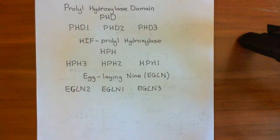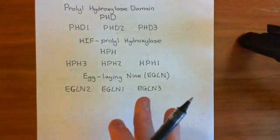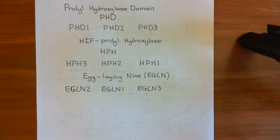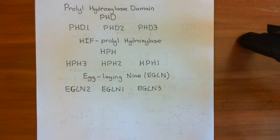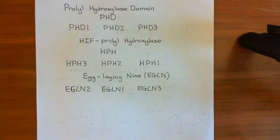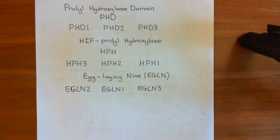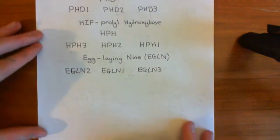That adds confusion, but if you pick your favorite naming system and acknowledge the others make no sense, you'll be fine. We will use the prolyl hydroxylase domain naming system — the PHD system. These PHD enzymes all catalyze the hydroxylation of proline residues at positions 402 and 564 on the oxygen-dependent degradation domain of HIF-1α, and they will only do this in normoxic conditions.